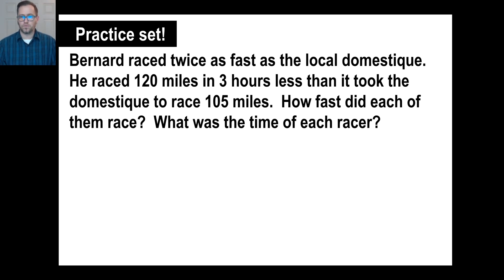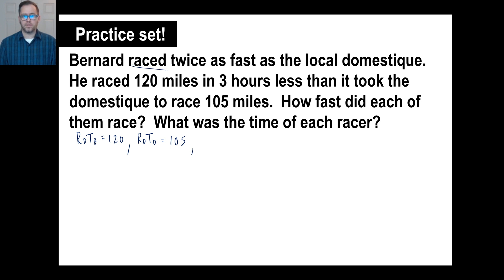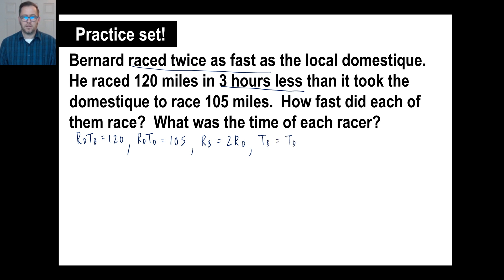Bernard raced 120 miles, so rate of Bernard times time of Bernard equals 120. Three hours less than it took the domestique to race 105 miles, so rate of domestique times time of domestique equals 105. Bernard raced twice as fast, so rate of Bernard equals two times the rate of the domestique. And the time of Bernard is the time of the domestique minus three.